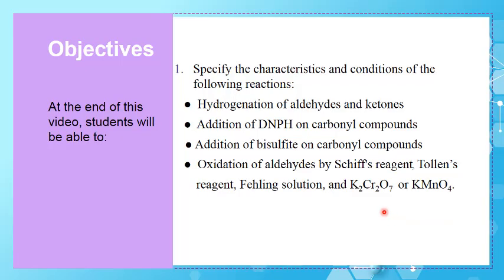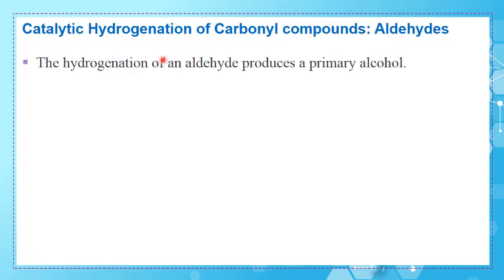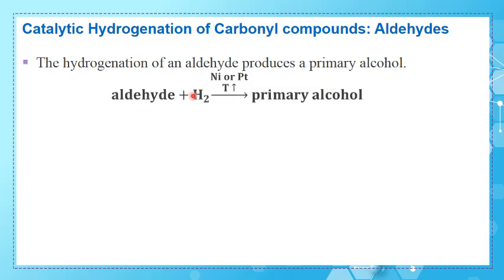In this part, we have to specify the characteristics and conditions of the following reactions. Let's start with the first reaction, which is the catalytic hydrogenation of carbonyl compounds, starting with aldehydes. The hydrogenation of an aldehyde produces a primary alcohol — an aldehyde plus hydrogen in the presence of a catalyst such as nickel or platinum and upon heating gives a primary alcohol. This is why it's called catalytic hydrogenation, because we need a catalyst.